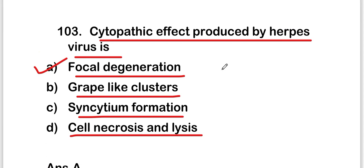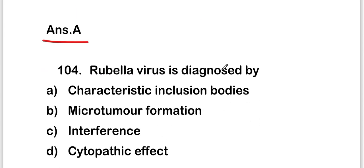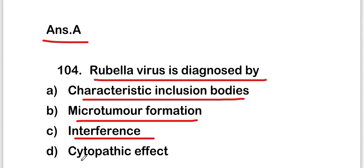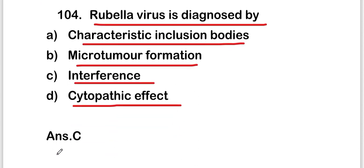The next question is: rubella virus is diagnosed by — characteristic inclusion bodies, microtumor formation, interference, or cytopathic effect? The right answer is option C, that is interference. Rubella virus is diagnosed by interference.